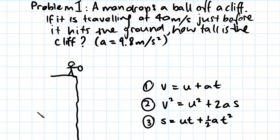We know 40 meters per second is the final velocity because that's just before it hits the ground. We also know that the ball is stationary before he drops it, so that means our initial velocity is zero. We know our final velocity, we know our initial velocity, and we know our acceleration.